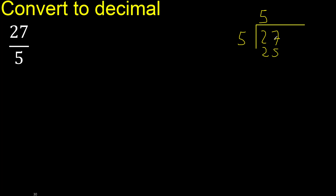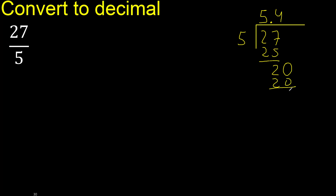27 minus 25 is 2. The remainder is not a full number, so we complete it — always complete with 0, adding a decimal point. 20: 5 multiplied by 4 is 20, and 20 minus 20 is 0. Therefore the answer is 5.4.